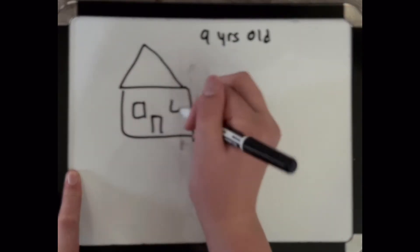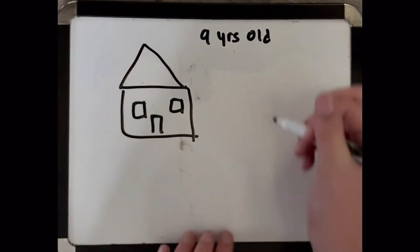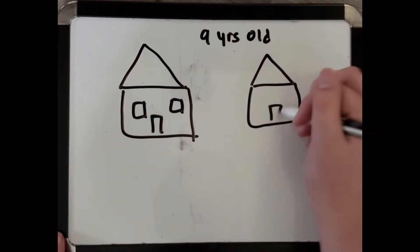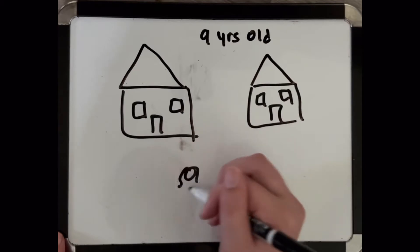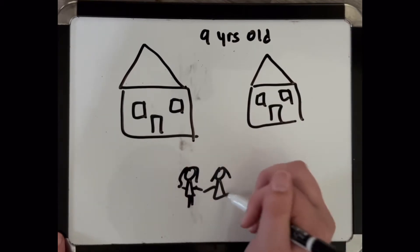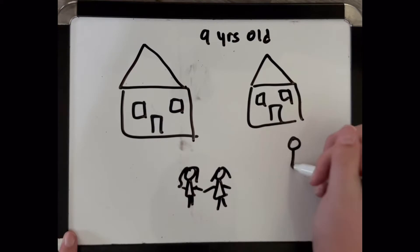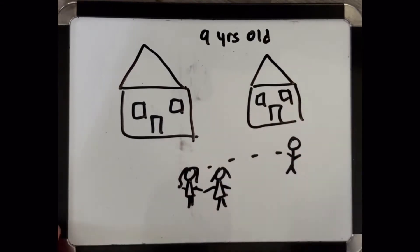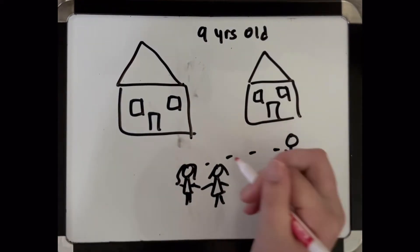At age nine, we ended up moving, and my parents started renting a house. I became best friends with the girl next door, and I ended up having a crush on her cousin, which would affect me years down the road.